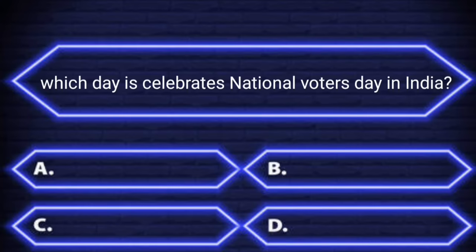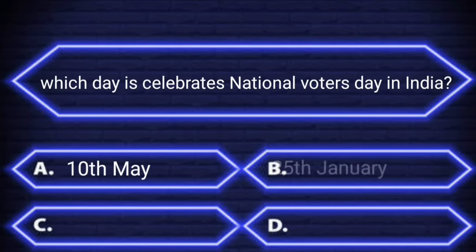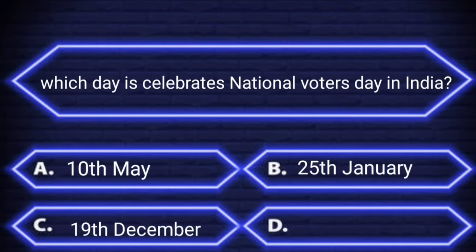It's National Voters' Day in India. A: 10th May. B: 25th January. C: 19th December. D: 2nd July. Your time starts now.